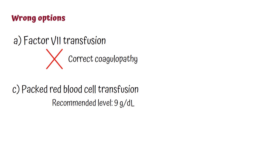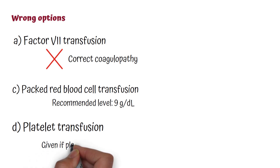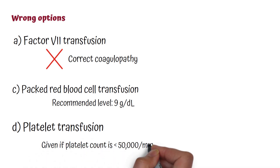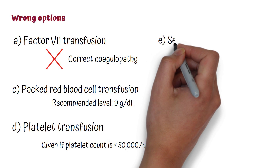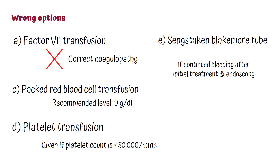If hemoglobin goes below 9, then transfusion is required. This patient's hemoglobin is 10.2 grams per deciliter, therefore transfusion is not required. Option D: platelet transfusion — platelets are given to patients with a platelet count less than 50,000 per cubic millimeter. This patient's platelet count is 72,000, therefore platelet transfusion is not required. Option E: Sengstaken-Blakemore tube is used if the patient has continued bleeding after initial treatment and endoscopy.